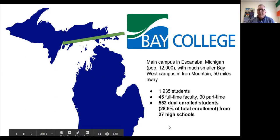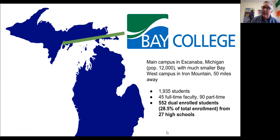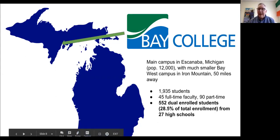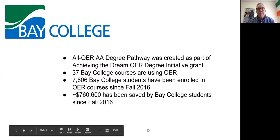We are a small place — 45 full-time faculty, between 90 and 100 adjuncts. But like everywhere else, dual enrollment has become an increasingly important part of what we do. As of fall 2016, we had over 500 dual enrolled students — 20.5% of our total enrollment — from 27 area high schools. They're spread across all sorts of classes, but most are in our gen ed classes, many of which are OER.